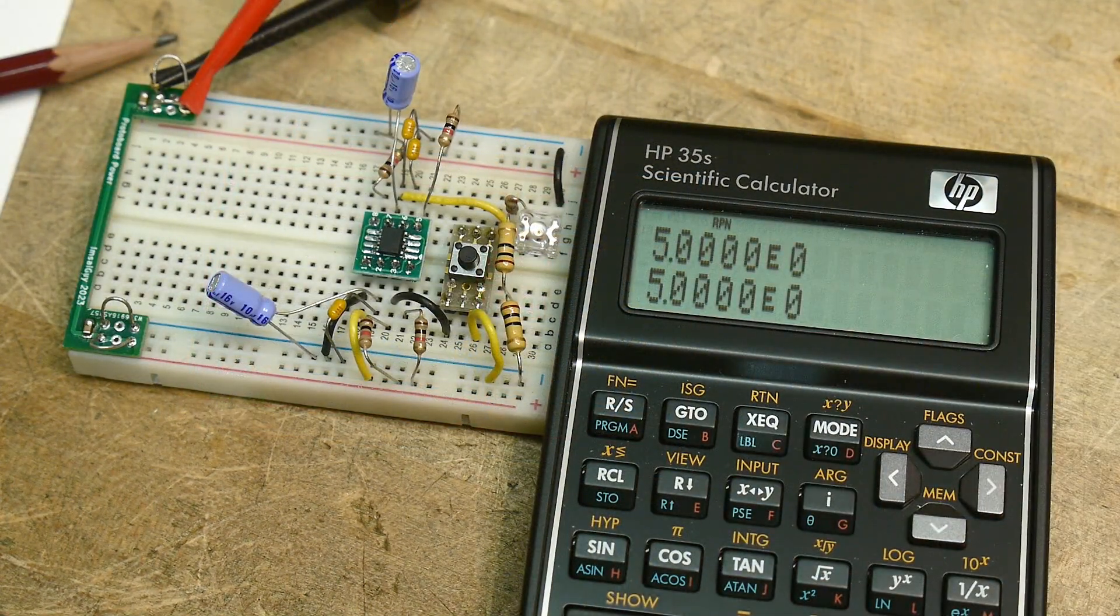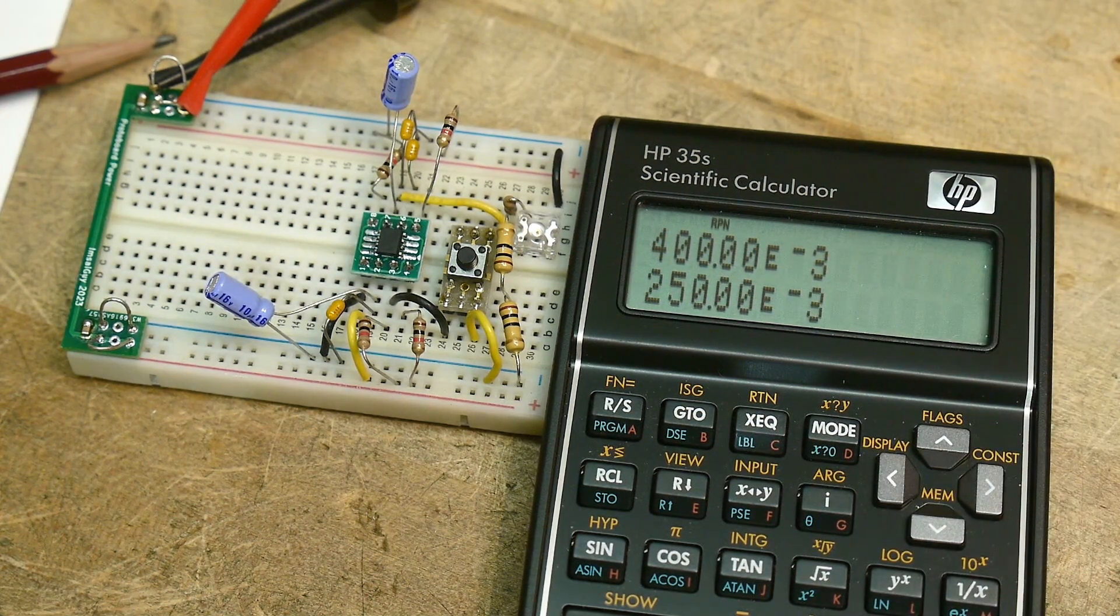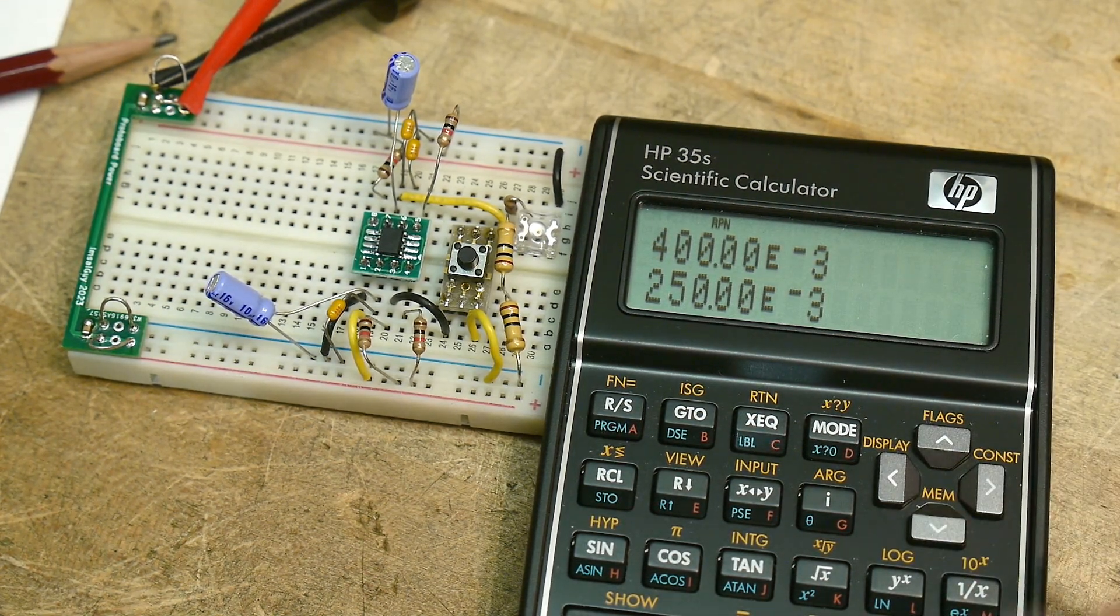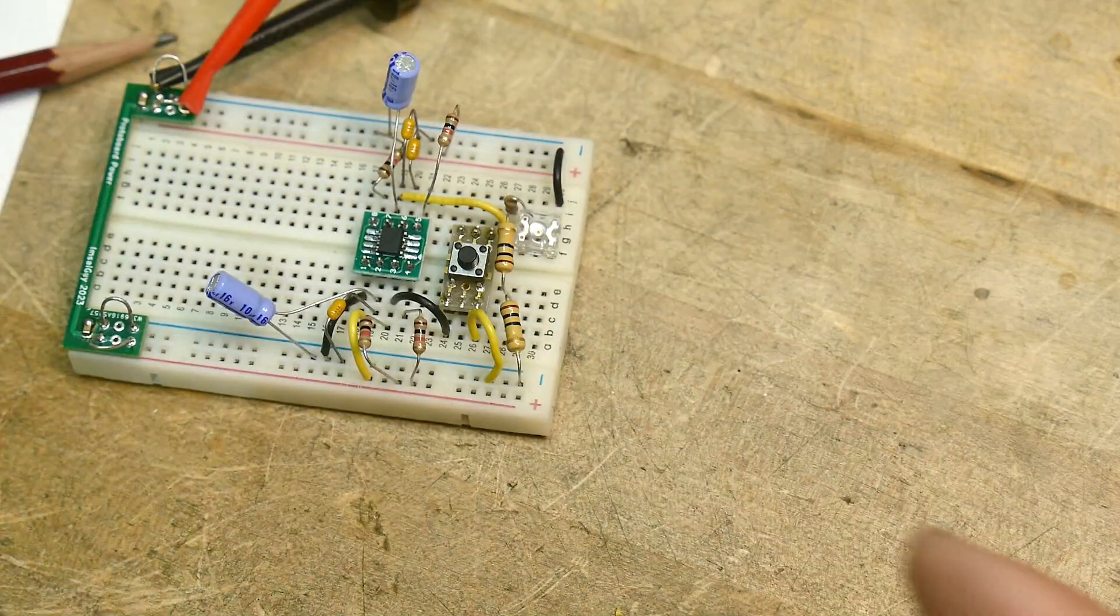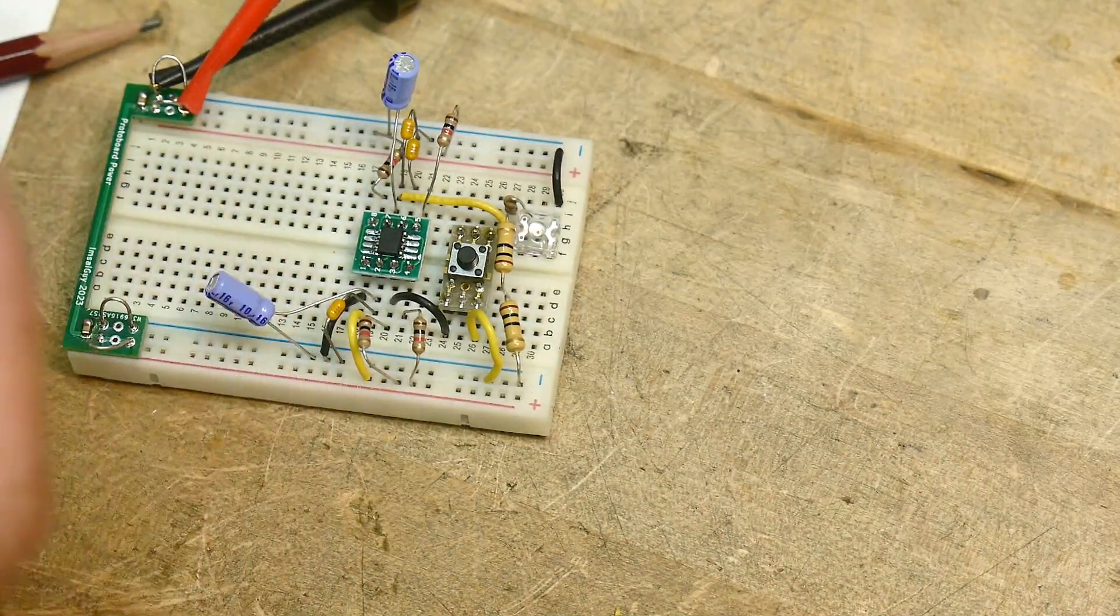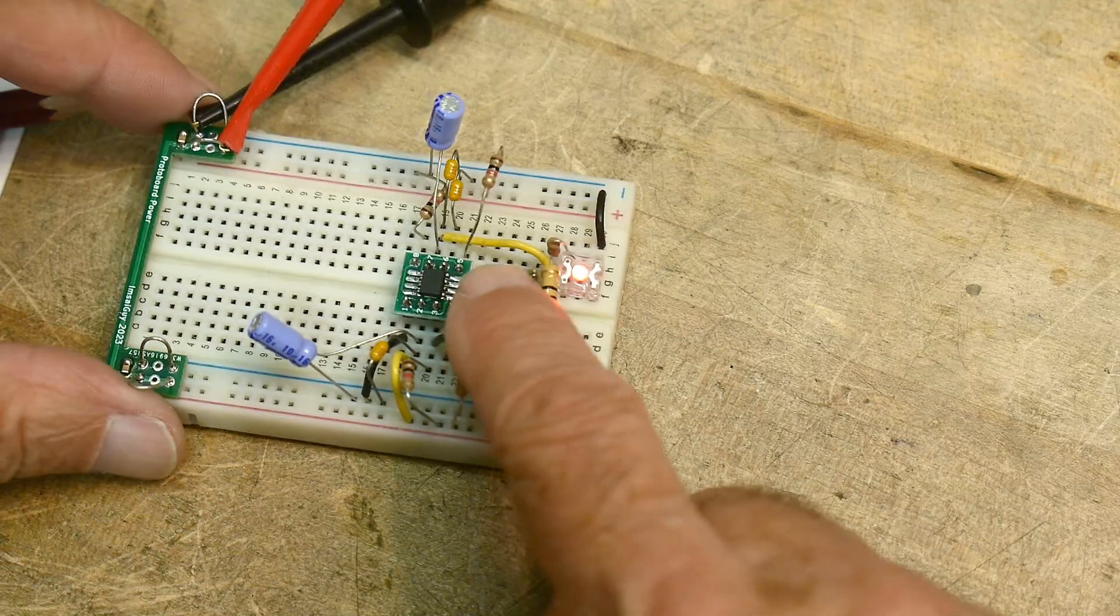So let's do a quick calculation. We've got 5 volts and 20 ohms. So we have 250 milliamps. Okay. So 250 milliamps is half of its rated current. And so that's working just great.